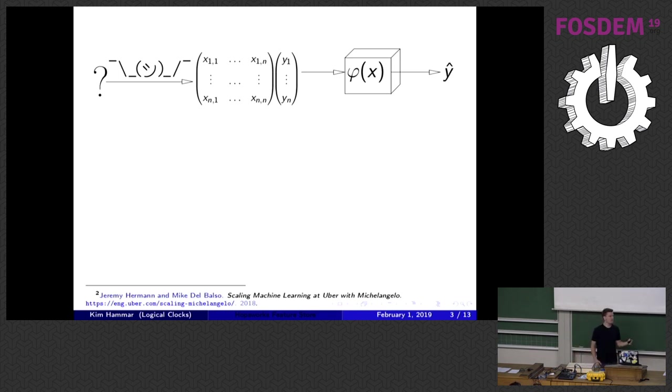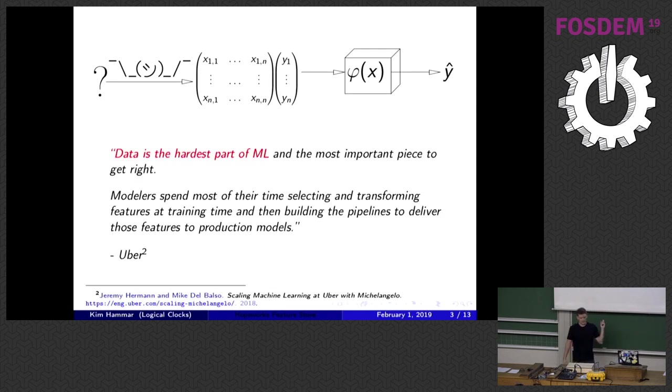And what we're seeing now increasingly when machine learning is getting adoption in industry is that this process of extracting the X and Y values and getting the data in the right format and the right time for doing machine learning is a very big task. And some companies even argue that this is the hardest problem in machine learning right now.